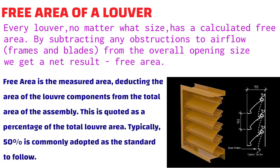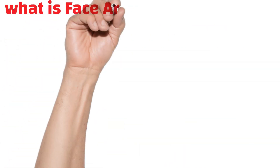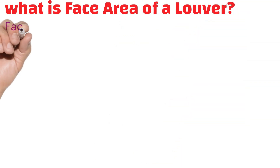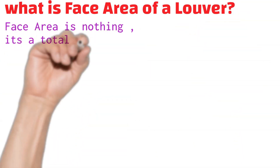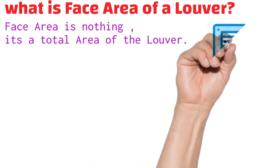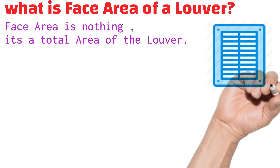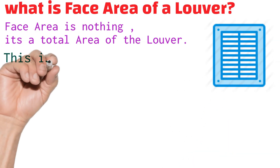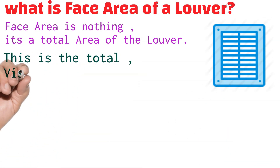What is the face area of a louver? Face area is simply the total area of the louver. This is also called the total visible area of the louver.